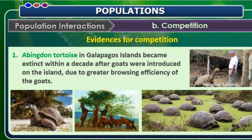What are the evidences for this competition? In the earlier days, on the Galapagos Island, there was a high population of Abingdon tortoise. Whenever goats were introduced into that place, due to their browsing efficiency, the tortoises disappeared from that area and the habitat was flourished by the goats. So whoever is superior, their population survives, and the other one is excluded.